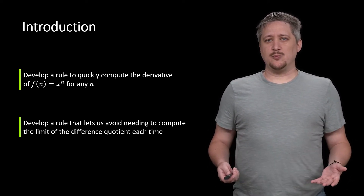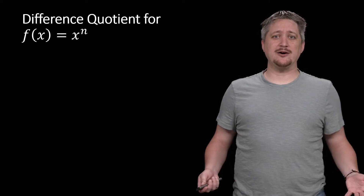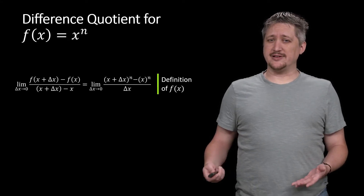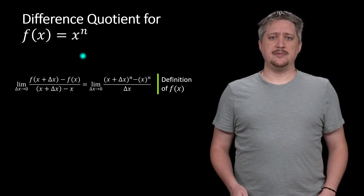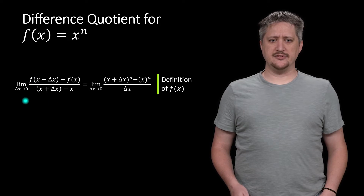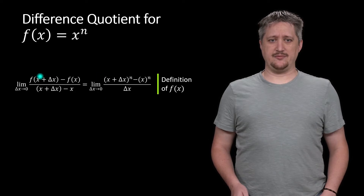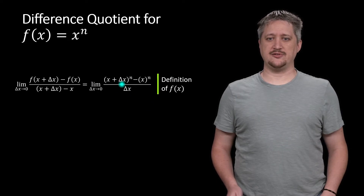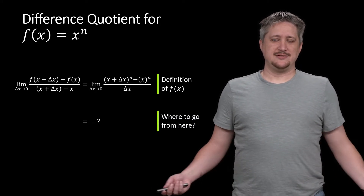Usually when you're trying to develop these rules, you start by writing out what you want to compute. We know we need to use the difference quotient — that's the definition of the derivative. So if my function is x to the n, I plug it into the difference quotient to get: the limit as delta x goes to zero of (x plus delta x)^n minus x^n, all over delta x.